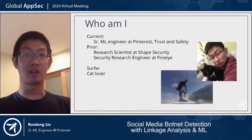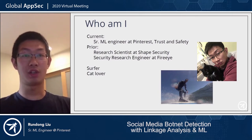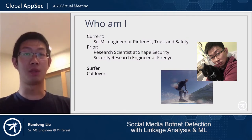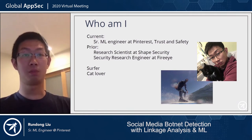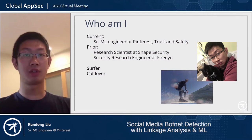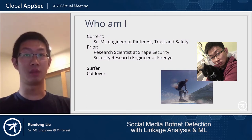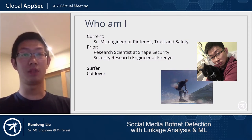Before we get started, let me give some introduction about myself. My name is Ren Dong. I'm a senior machine learning engineer in the trust and safety team at Pinterest. The trust and safety team is like the integrity team — our responsibility is to detect abusive users and unsafe content, basically to make Pinterest safer. I've been leading the effort building machine learning solutions for spam and anti-abuse. Before this, I worked at Shape Security as a research scientist, where my research was mainly around detecting automated web attacks. My first job was at FireEye, focusing on malware analysis and email security.